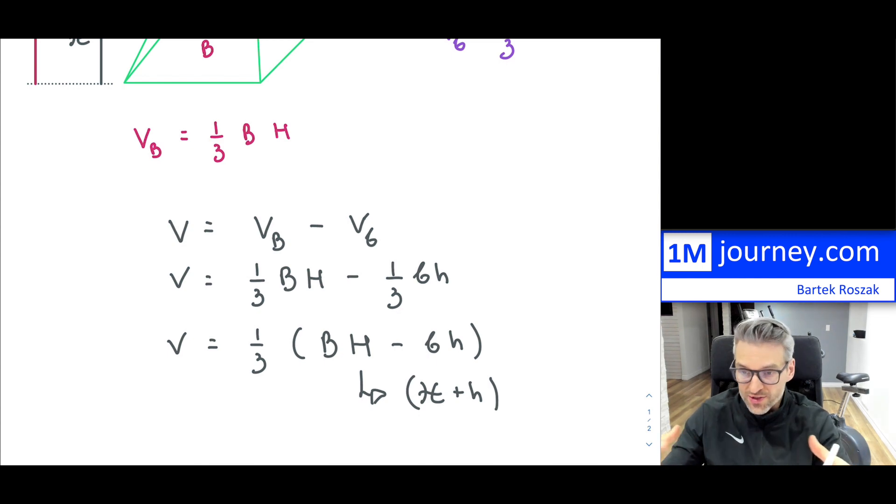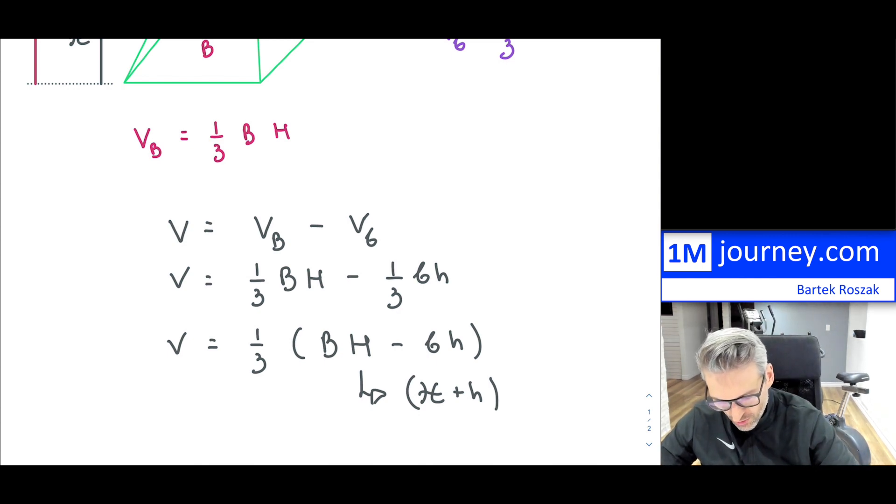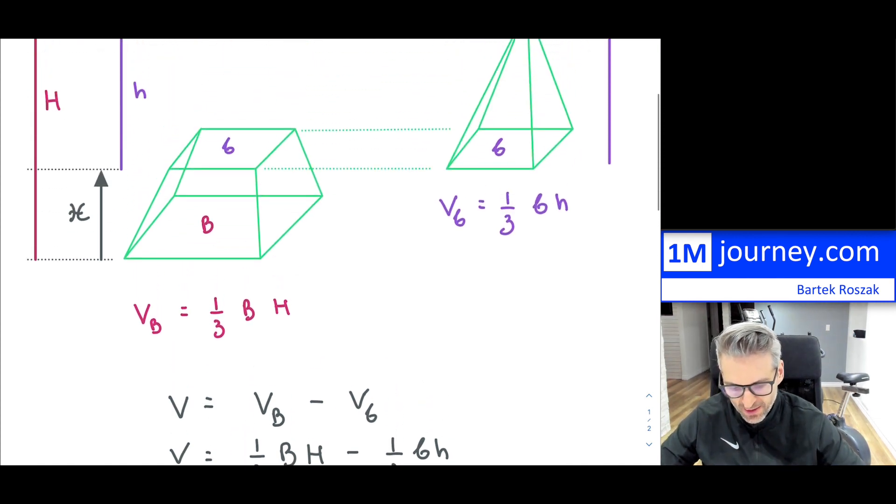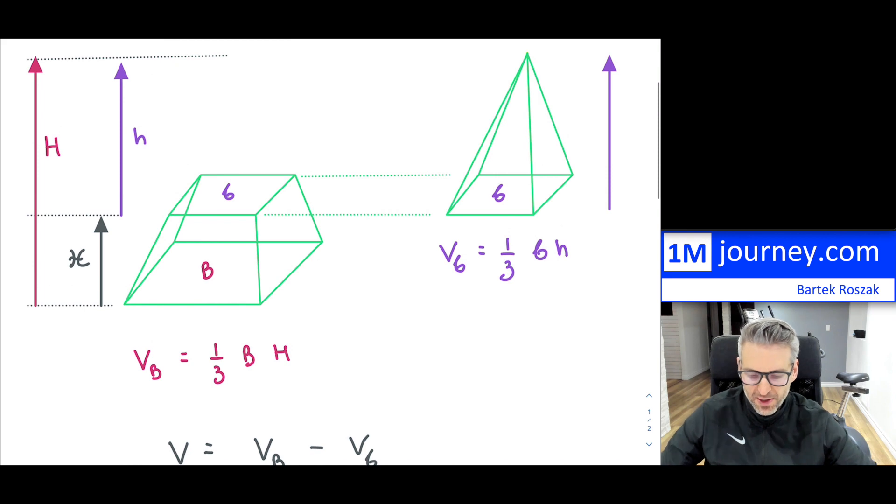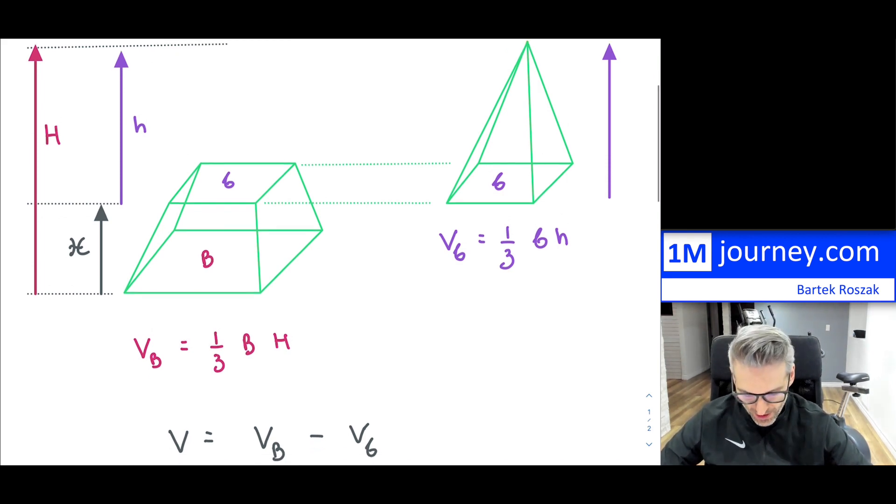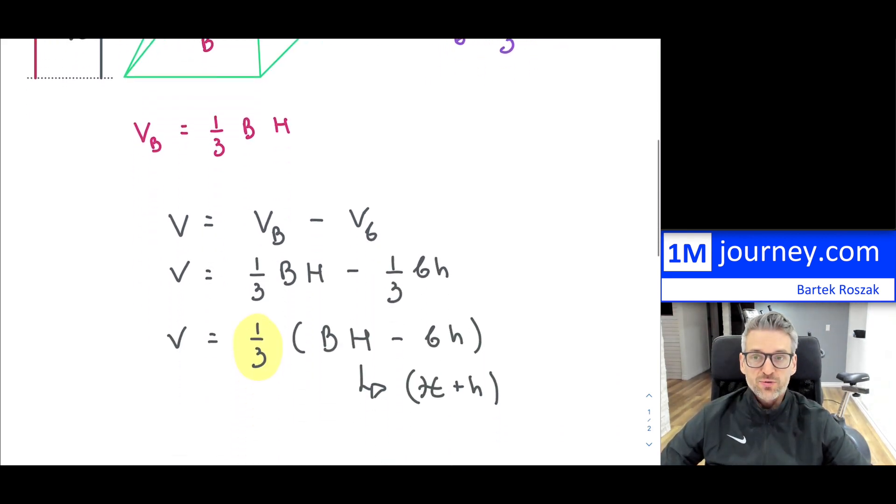Now, how you do this, it doesn't really matter. But the key question is, is there a third or not? And of course, there's going to be a third because it's just made up of two pyramids, the big pyramid, and then you can subtract the small pyramid, and then you can find your actual volume.